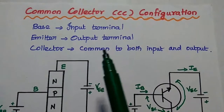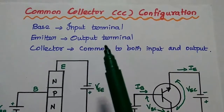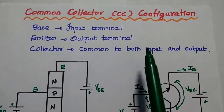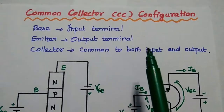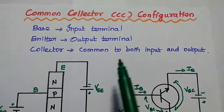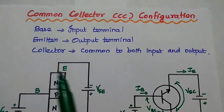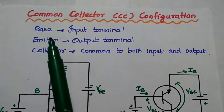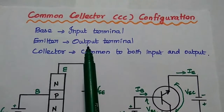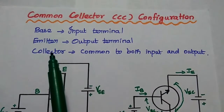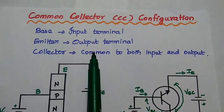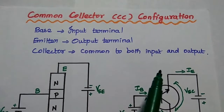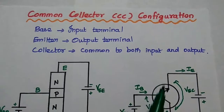We are going to discuss common collector configuration and its characteristics in detail. In this configuration, the base is the input terminal, the emitter is the output terminal, and the collector is common to both input and output.